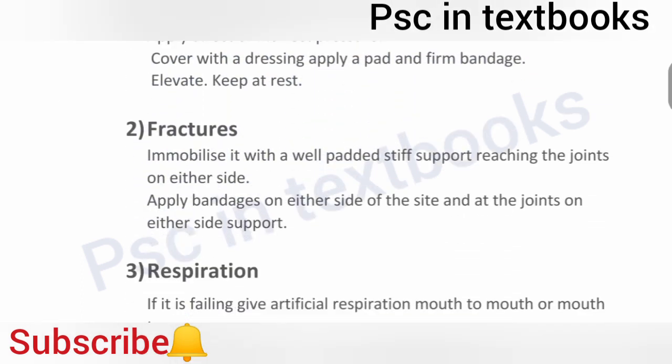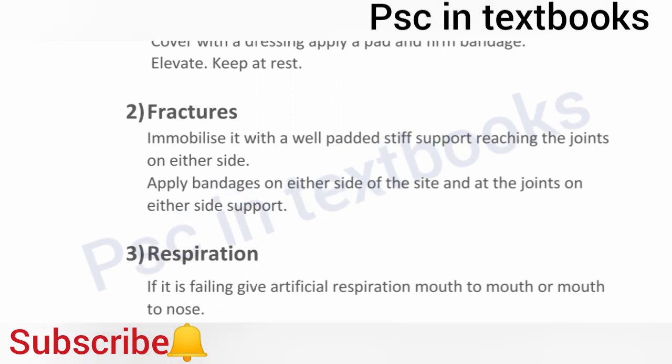Fractures: the types of fractures can be detailed. Immobilize it with a well-padded stiff support reaching the joint on either side. Apply bandages on either side of the fracture and around the joints on either side. This is the first aid for fractures.